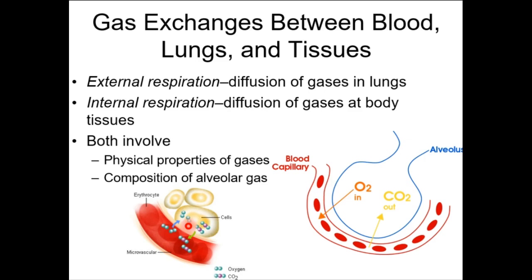Cellular respiration — remember that term? The formula: glucose plus oxygen produces ATP, water, and carbon dioxide. So internal respiration allows for cellular respiration — that's the whole reason we breathe, so our cells can get oxygen, complete cellular respiration, and produce ATP. The byproduct carbon dioxide is another part of that respiratory pathway.